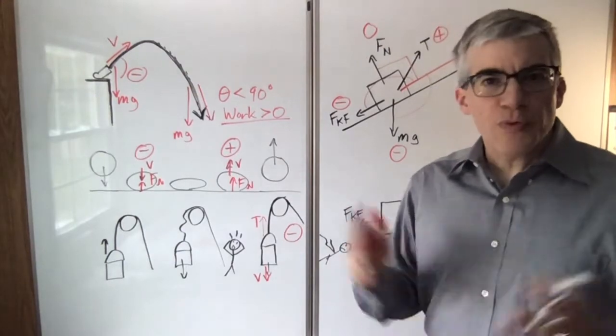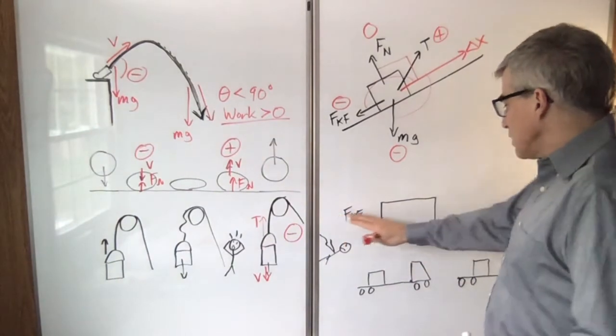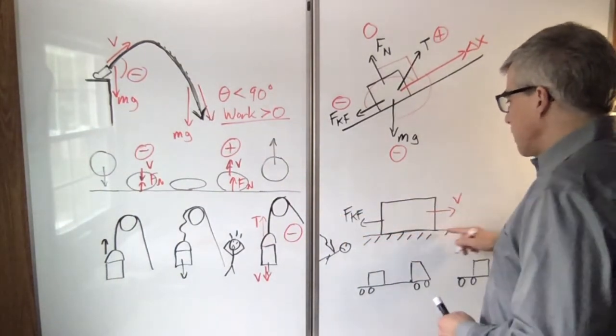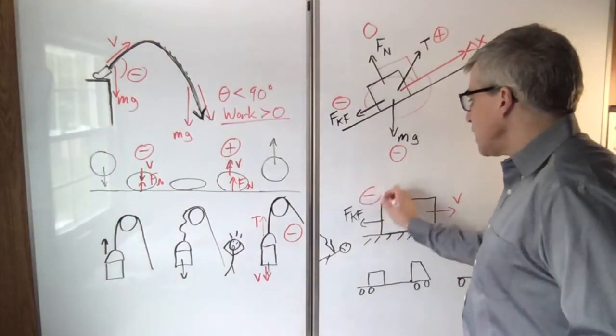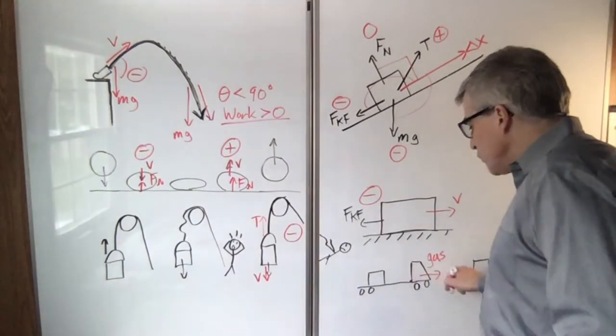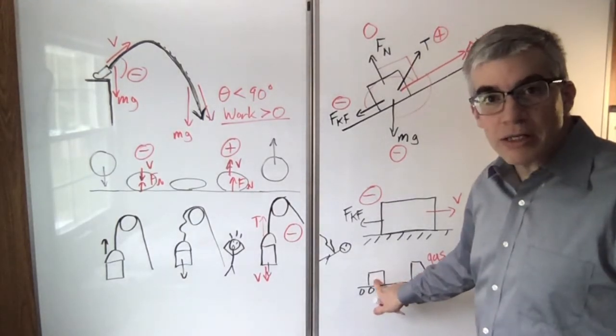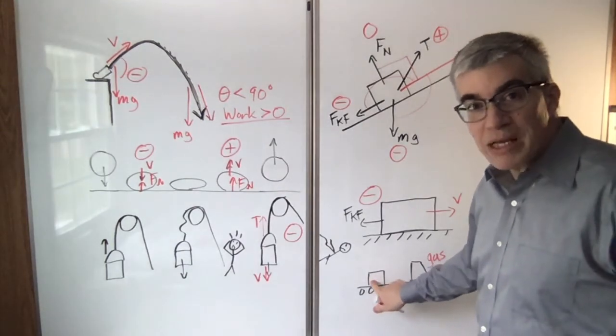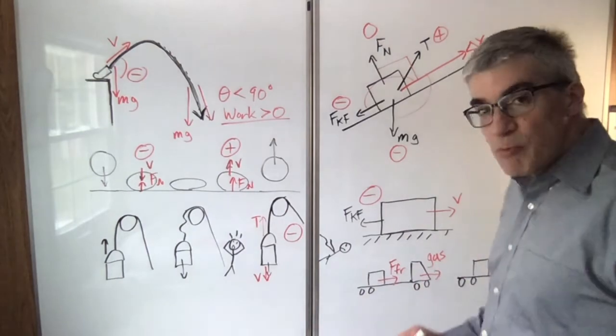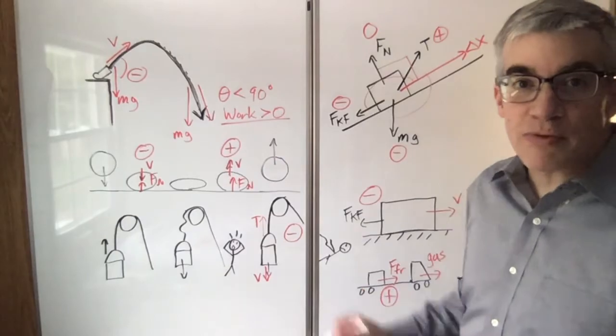A lot of people say friction always does negative work. Not always. If you have a box sliding along, and this is the velocity, it's scraping and coming to a halt, then yes, the work is negative. But suppose you have a box on a truck, and you hit the gas. You start moving that way faster and faster. Well, this box is just going to sit here unless there's friction. The friction is what makes this box move. Force of friction is that way. It's the same way you're going. Friction is doing positive work. Static friction is doing positive work on that.